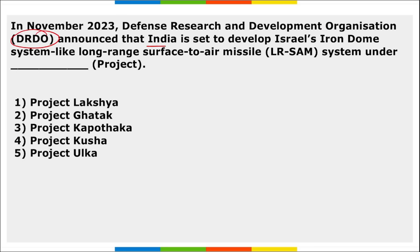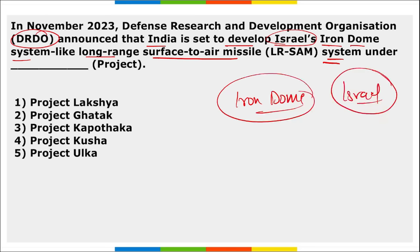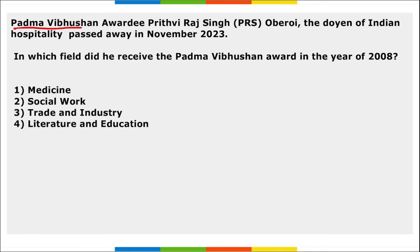DRDO announced that India will develop an Iron Dome-like long-range surface-to-air missile system under Project Kusha. This surface-to-air missile system will be deployed by the year 2028 to 2029.